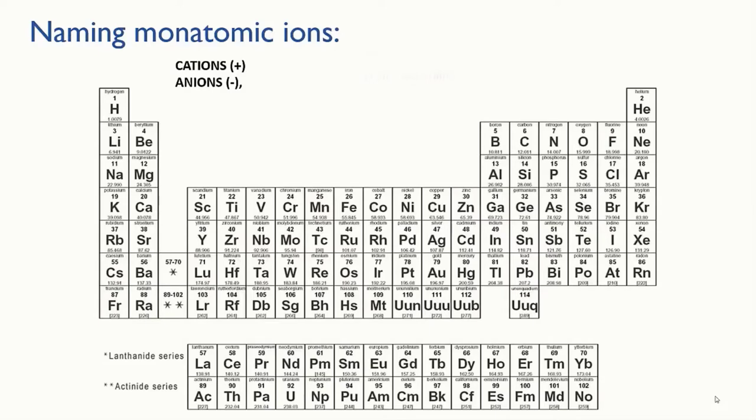First, let's look at simple monatomic ions. Monatomic means made of one atom, so a monatomic ion is simply an atom that has either lost some electrons and become a positively charged cation, or it's gained some electrons and become a negatively charged anion.